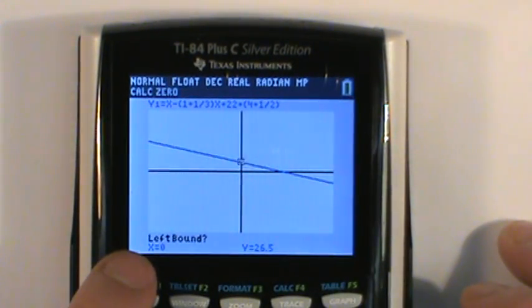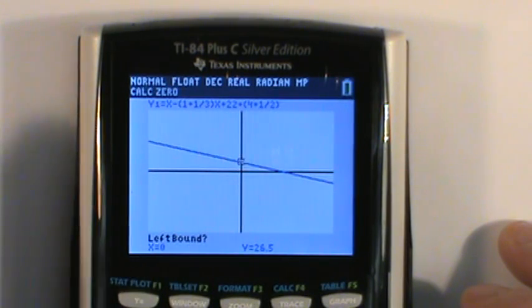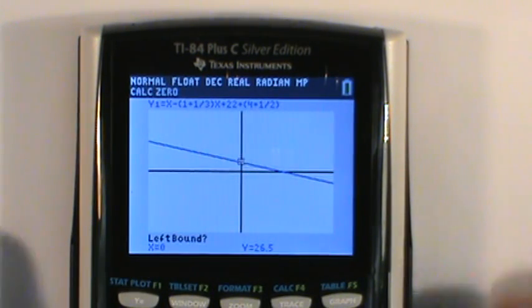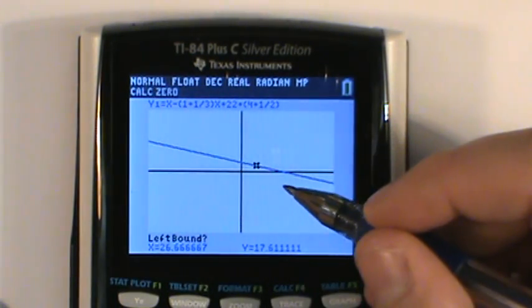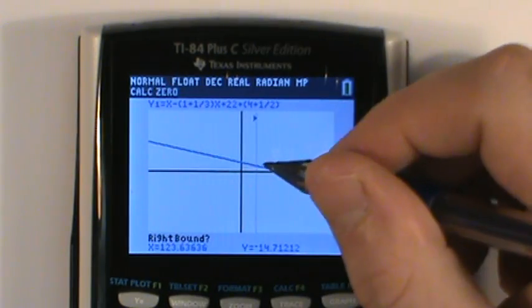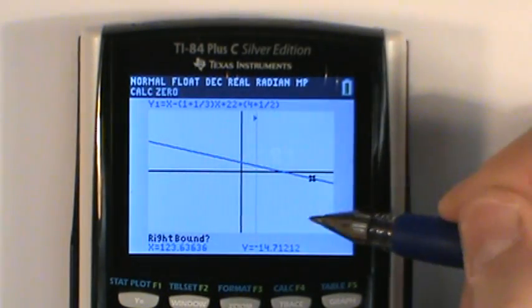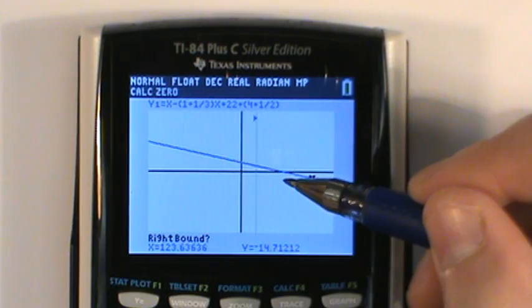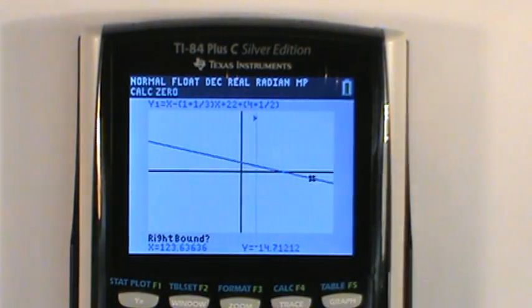The calculator is asking for the left side of where this is crossing the x-axis. So I just scroll over. Make sure that I'm to the left of where it crosses the x-axis. I hit enter. Now the calculator will ask for a right bound. I have to go to the right of where the point of intersection is, of where it crosses the x-axis. Now clearly I'm to the right of where that point of intersection is, that zero is. I hit enter. And then it will always ask for a guess. You could just hit enter again.